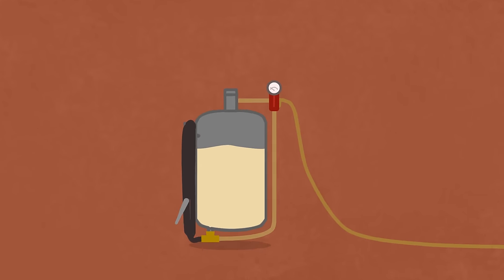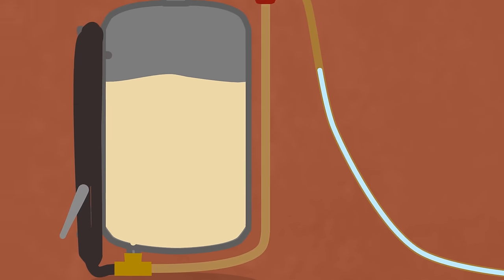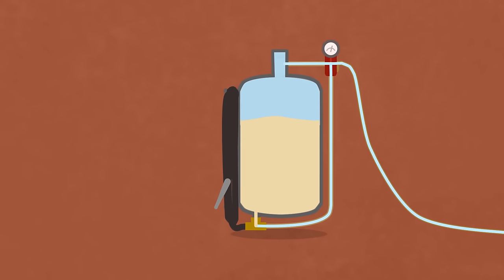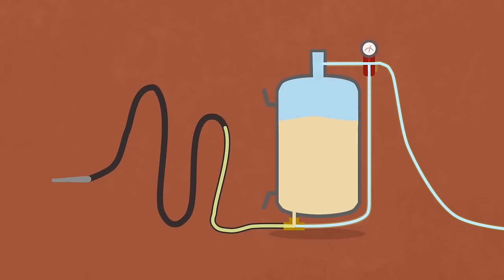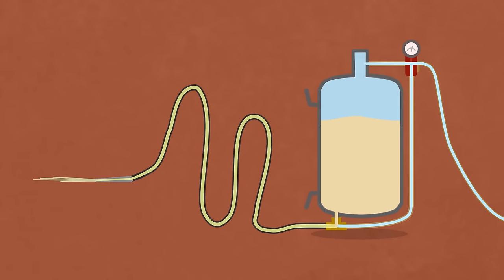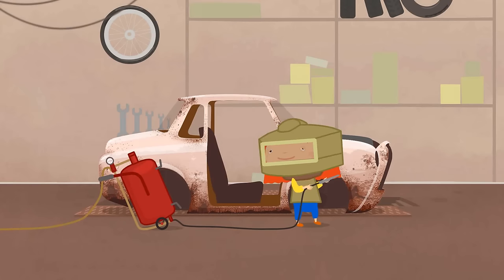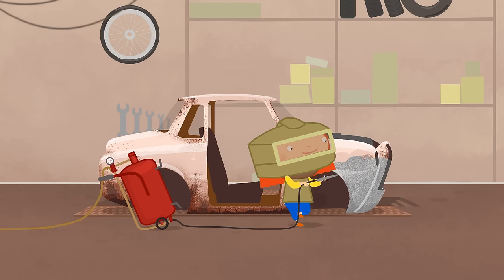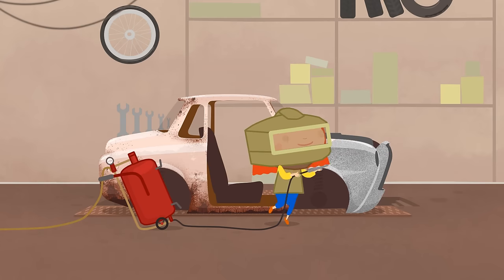And this hose supplies the tank and the mixer with air. Air and sand are mixed and thrown out with a special pistol. It's time to turn on the machine. It's time to turn on the air.